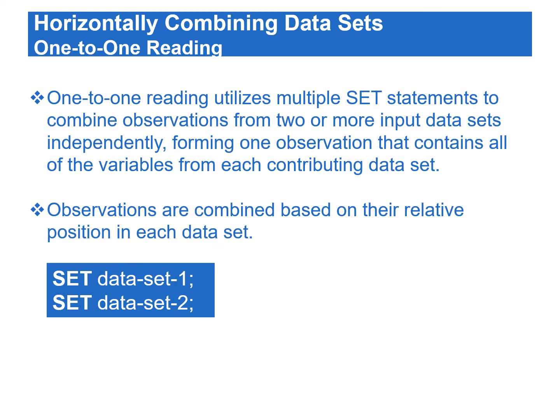Now let's talk about combining data horizontally. Combining data sets horizontally is needed when variables come from different sources. There are several ways of combining data horizontally, such as one-to-one reading, one-to-one merging, match merging, and updating data sets.